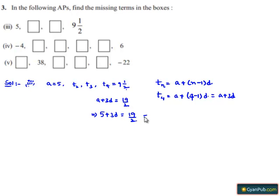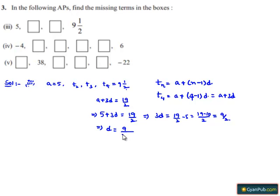This implies 3d = 19/2 minus 5. Taking LCM of 2, that gives 19 minus 10, which equals 9/2. Therefore d = (9/2) divided by 3, and since 3 goes into 9 three times, d = 3/2.